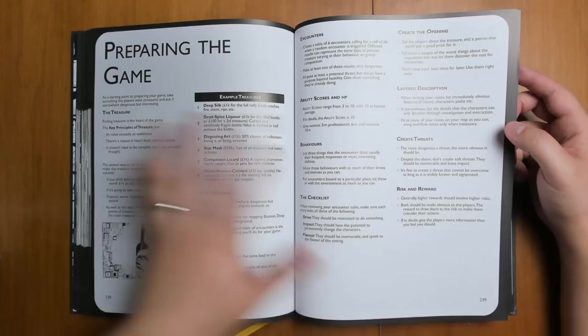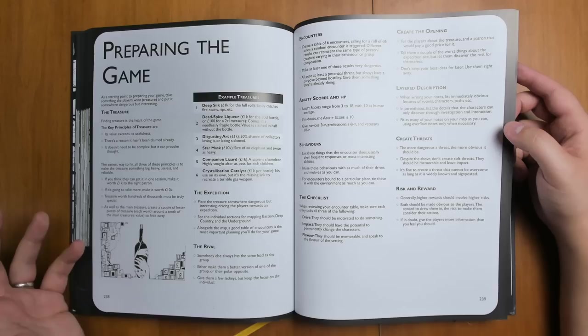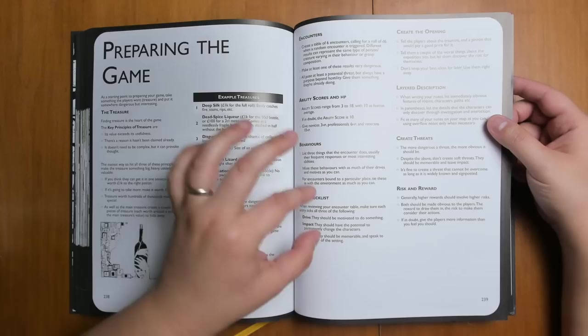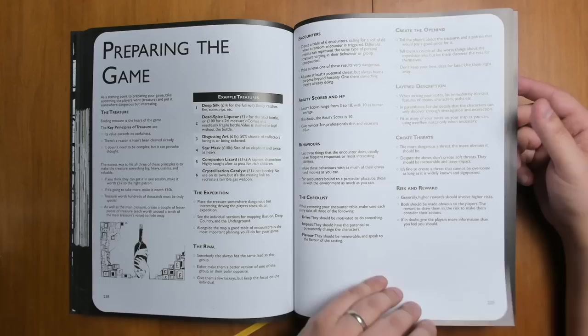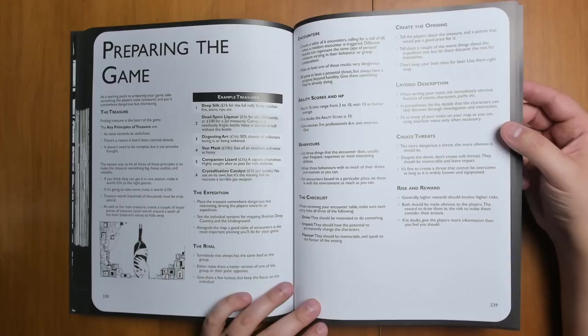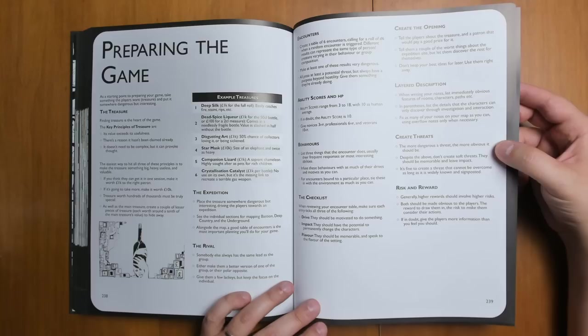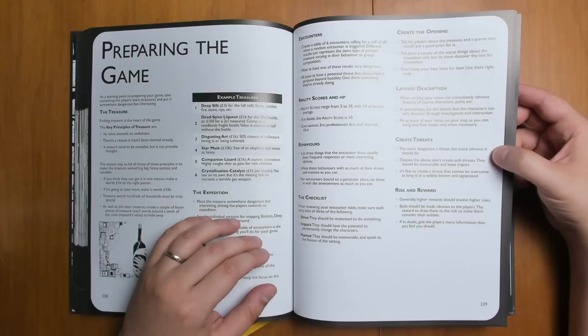This Game Master's Guide is something that I would happily give to new players to rapidly get them up to speed with some excellent advice on running the game. Everything is often broken down into three bullet points. This is a common pattern that you see throughout the book. So, for example, create threats. The more dangerous a threat, the more obvious it should be. Despite the above, don't create soft threats. They should be memorable and leave impact. It's fine to create a threat that cannot be overcome as long as it is widely known and signposted. A lot of this advice I've read before on Chris's blog, and it was hugely influential to me while I was writing games like Knave and Maze Rats.